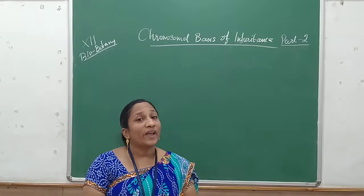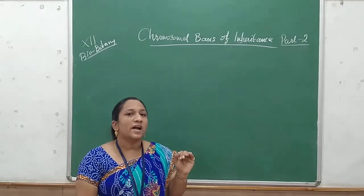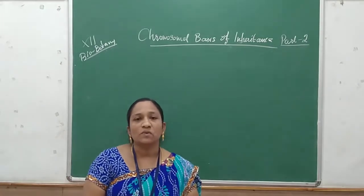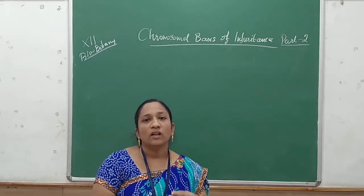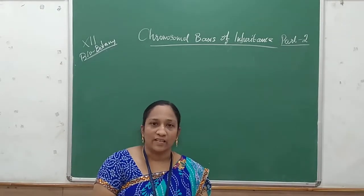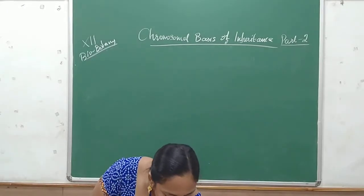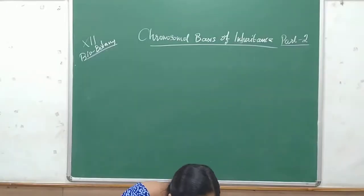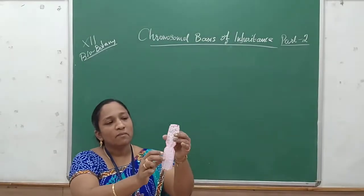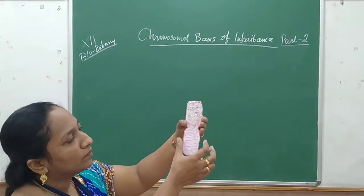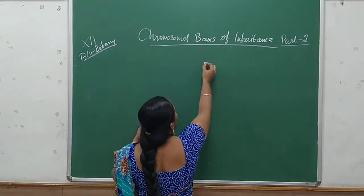Last class we started at T.H. Morgan, who gave the evidence that chromosome is the basis for this inheritance — basic for inheritance. I am showing the chromosome just as a model. This is a simple model I made. This is the structure of chromosome. We know the structure of chromosome now.